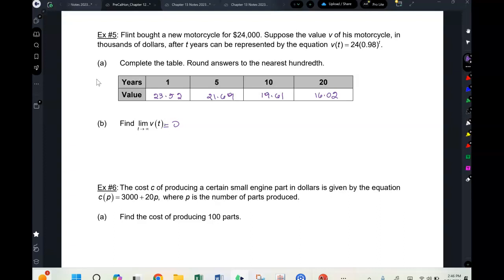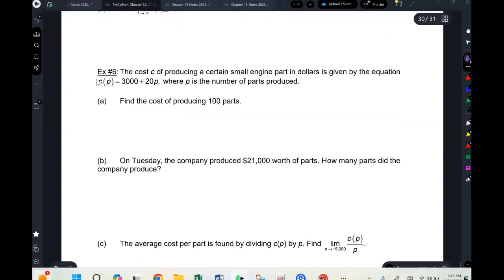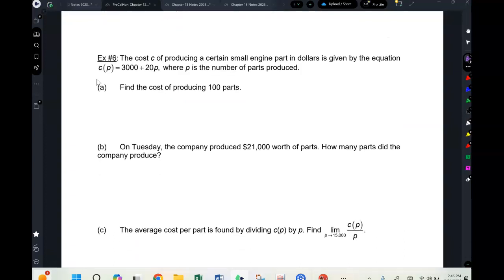So the cost c of producing a certain small engine part in dollars is given by the equation c(p) = 3000 + 20p, where p is the number of parts produced. Find the cost of producing 100 parts. Okay, so this is c of 100. It's $3,000 plus blah blah blah, no big deal. It's $5,000.